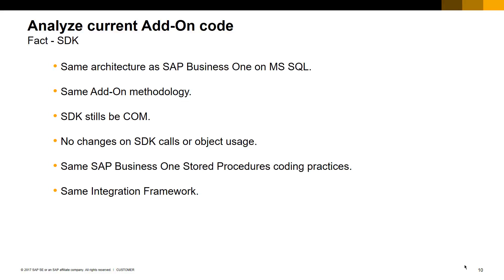So, if we have the same architecture between SAP Business One on Microsoft SQL Server and SAP Business One for SAP HANA, we have the same add-on methodology. The SDK still uses COM components, namely the DI and UI APIs. There is no change for SDK calls or object usage. We have the same stored procedures and the same integration framework.